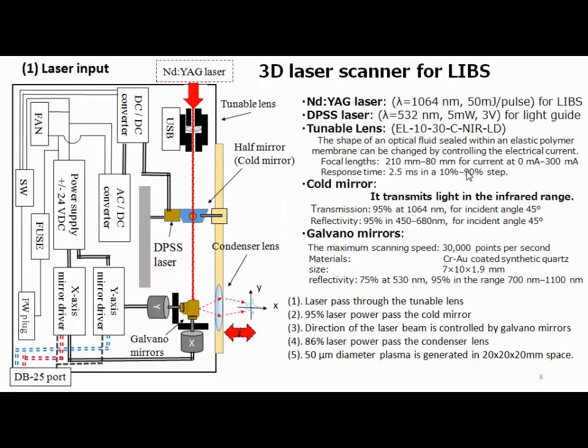This is the 3D laser scanning system and its specifications. When the laser enters from above, it passes through a tunable lens. The tunable lens is controlled by a PC via USB connection. The laser also passes through a half mirror, and then a galvanometer mirror is used for controlling the 2-dimensional position. The tunable lens and galvanometer mirror system enables 3-dimensional adjustment of the laser focal point.